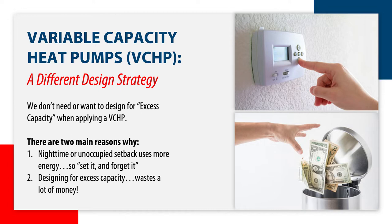The second reason you'll need to design differently is that heat pumps are not as powerful as fossil-fueled equipment. Residential gas furnaces are available in 120,000 BTU models, yet the largest single-phase heat pump is 60,000 BTUs. While it is possible to use multiple heat pump systems in a home, the design goal should be to minimize the amount of heat pump capacity to only what is needed.